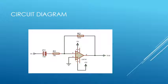In the circuit diagram, we have used a 10uF capacitor and two resistors with values of 10k and 100k. The inverting input is connected to resistor R1 and the non-inverting input is connected to ground.